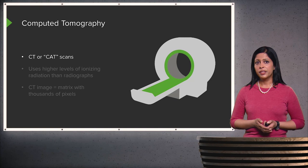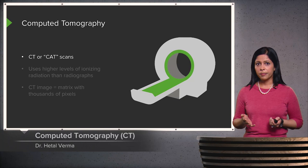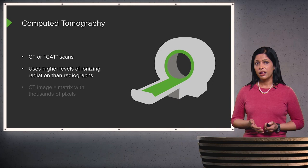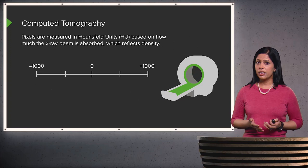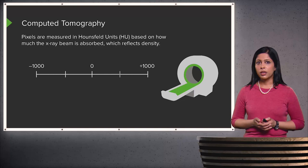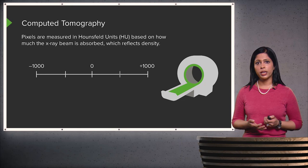Computed tomography, also known as a CT scan or CAT scan, uses higher levels of ionizing radiation than a radiograph. A CT image is created as a matrix made up of thousands of different pixels. Pixels are measured in Hounsfield units, which are based on how much x-ray beam is absorbed by the object and reflect its density. The scale ranges from negative 1,000 to positive 1,000.